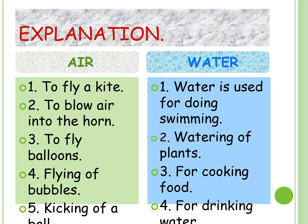On the right hand side it is for water. Water is used for swimming, watering of plants, cooking food, drinking water, and washing fruits and vegetables. For these activities, what we require? We require water. To summarize for air: to fly a kite, to blow air into the horn, to fly balloons, flying of bubbles, kicking of a ball. And for water: swimming, watering of plants, cooking food, drinking water, and washing fruits and vegetables.